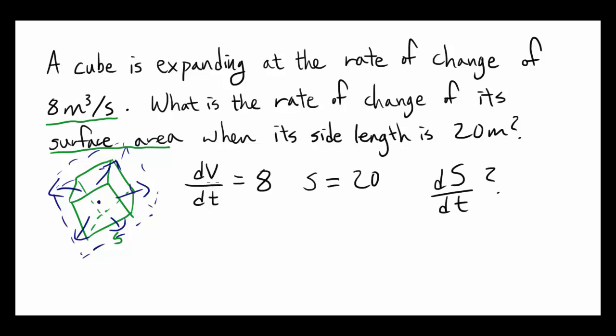Well, we know how to relate the volume of a cube and the side of a cube. We know volume is S cubed. Because S times S is going to give you the area of one face of the cube, and multiplying by another S is going to give you the entire volume of this cube. So V is S cubed.